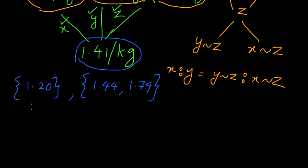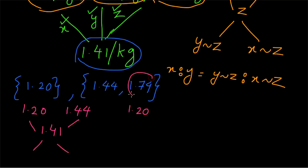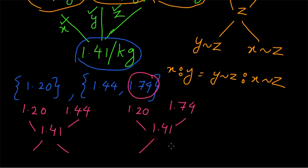Now we can apply the allegation rule to 2 elements, one from each group. We take 1.20 and 1.44 — when these 2 are combined, we get the mean of 1.41. The next pairing is 1.20 from the first group and 1.74 from the second group — when these 2 are combined, we also get 1.41. So now we apply the allegation rule.